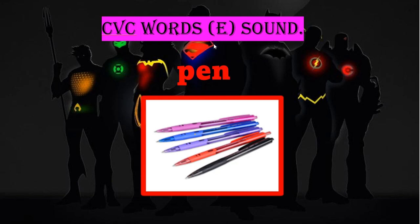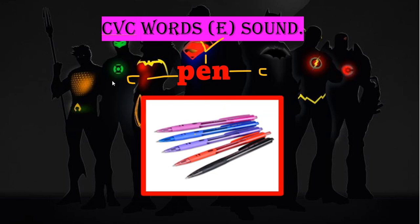CVC words are three-letter words. The first letter is a consonant (C), the second is a vowel (V), and the third is a consonant (C). That's why we learned consonants and vowels before — it was preparation for learning CVC words. These are easy three-letter words for you.